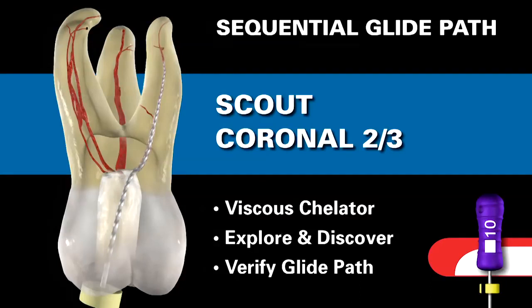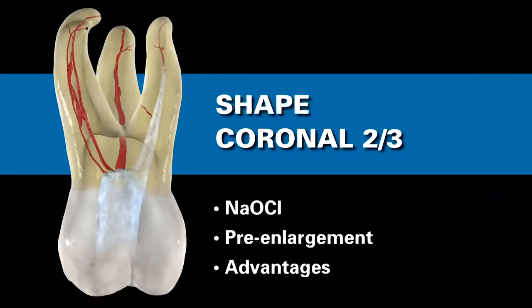Any time a file is going into any part of a canal where I've never been before, I need the viscous chelator. The 10 file can then be used to explore, discover, and negotiate a portion of the canal. Even in longer, narrower, and more curved canals, we can usually carry a 10 file about two-thirds of the overall expected working length. Once the 10 file is up about two-thirds of the way, move the file in and out in little short-amplitude strokes to verify that we have a glide path in preparation for mechanical canal preparation.